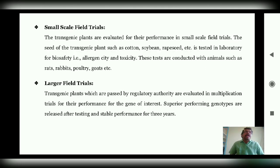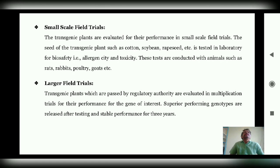Next, the transgenic plants are transferred to small-scale field trials, where they are evaluated for their performance. Seeds of transgenic plants, like cotton, are tested in laboratories and with animals. After small-scale field trials, these plants are grown in large field trials, multiplied in larger quantities, and superior genotypes are released for their performance.